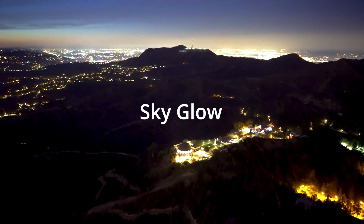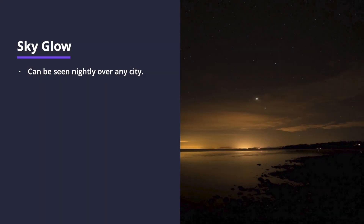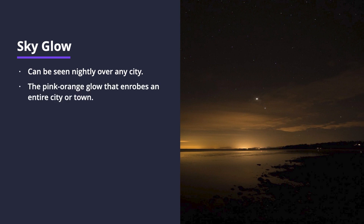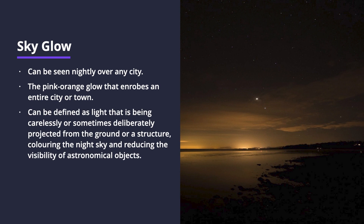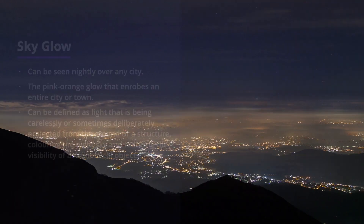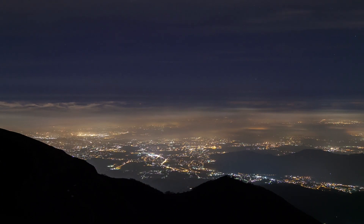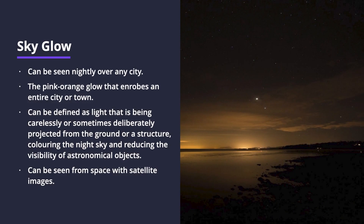The first form of light pollution is sky glow. Sky glow can be seen nightly over any city. It is the pink-orange glow that enrobes an entire city or town and it can be defined as light that has been carelessly or sometimes deliberately projected from the ground or a structure. Sky glow colors a night sky and reduces the visibility of astronomical objects. Sky glow can also be seen from space with satellite images showing a brightly lit earth.